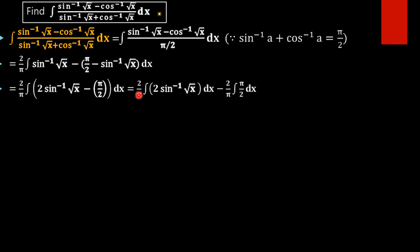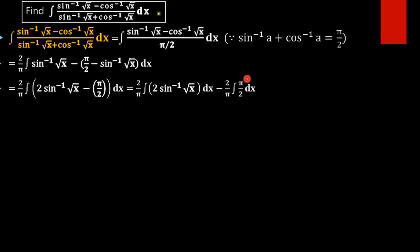Next, we take 2 over pi inside the integral and split it: 2 over pi times the integral of 2 sin inverse of root x dx, minus 2 over pi times the integral of pi by 2 dx. We note that 2 over pi and pi by 2 cancel the 2's and pi's, leaving just the integral of dx.